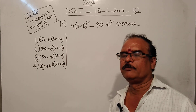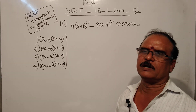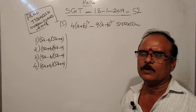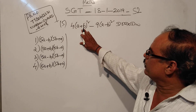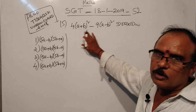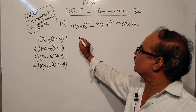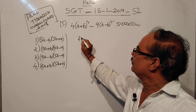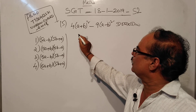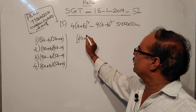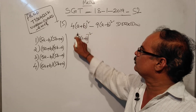Okay, the 15th question. It is actually an algebra question. It is equal to the direct formula. It is equal to 2. It is equal to 2. It is equal to 4.